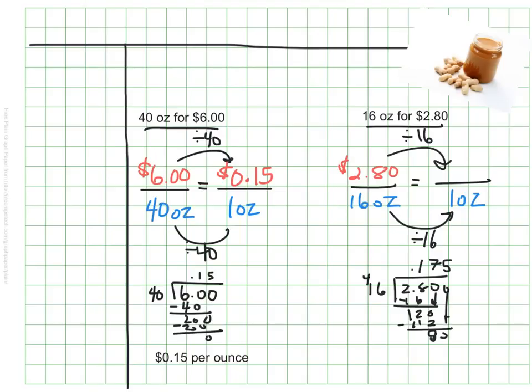My calculation here turns out that each of these ounces is going to cost approximately 18 cents. It ends up being 17 and a half cents, but in money we don't go past our penny. So I'm going to round that to 18 cents for each ounce.